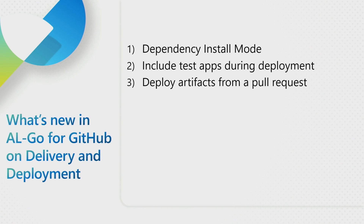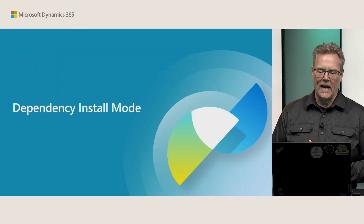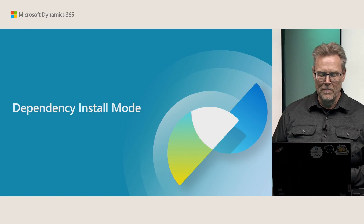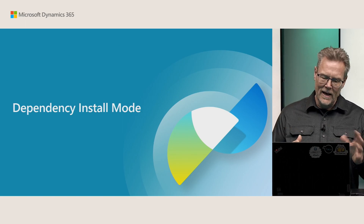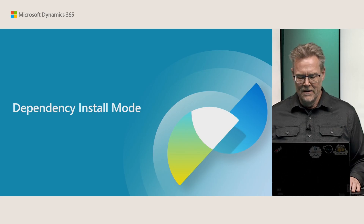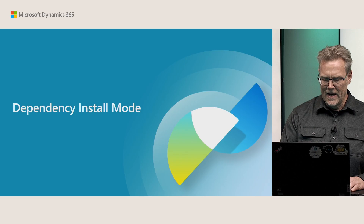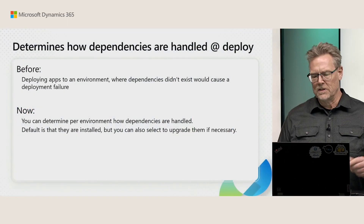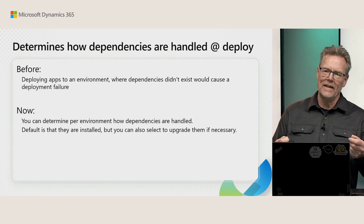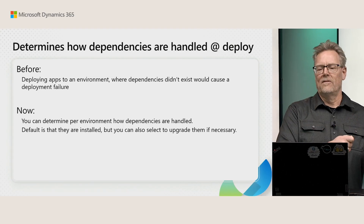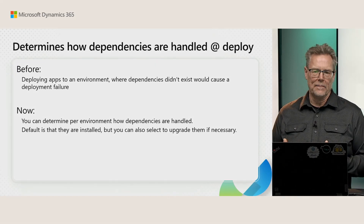The first thing we're going to talk about is dependency install mode, which actually is a requirement that came to us from a partner. He created a PR on AL-Go and said he would like functionality like this. We found there was a better way to do that, and now the feature is there. It's a setting you set on an environment that determines how dependencies are handled at deploy time.